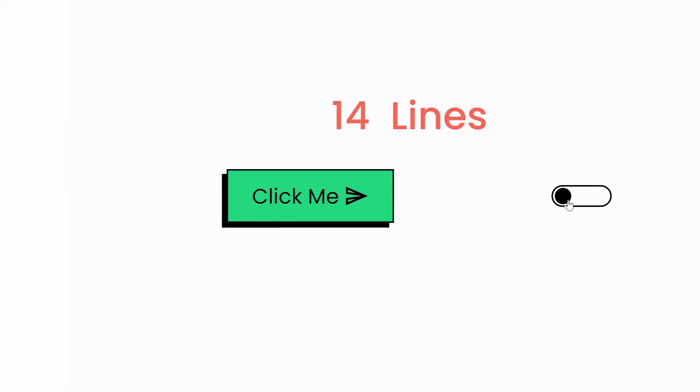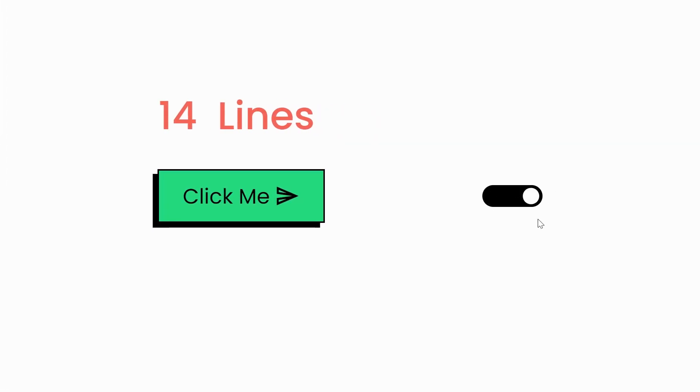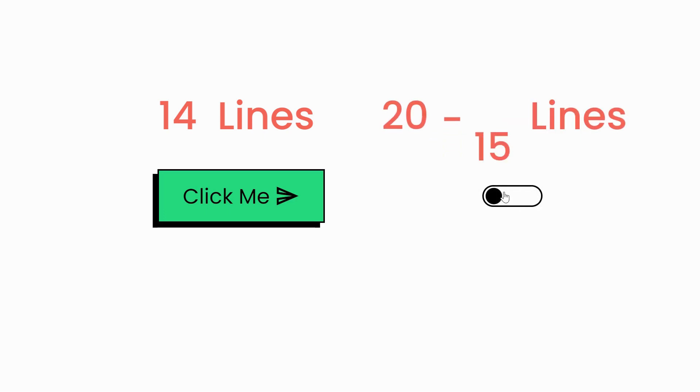The first one is a typical button that might appear complex to achieve, but it's done with just 14 lines of CSS. The second button is a toggle button, and while it took 20 lines of CSS, 15 of them are dedicated to styling the button.